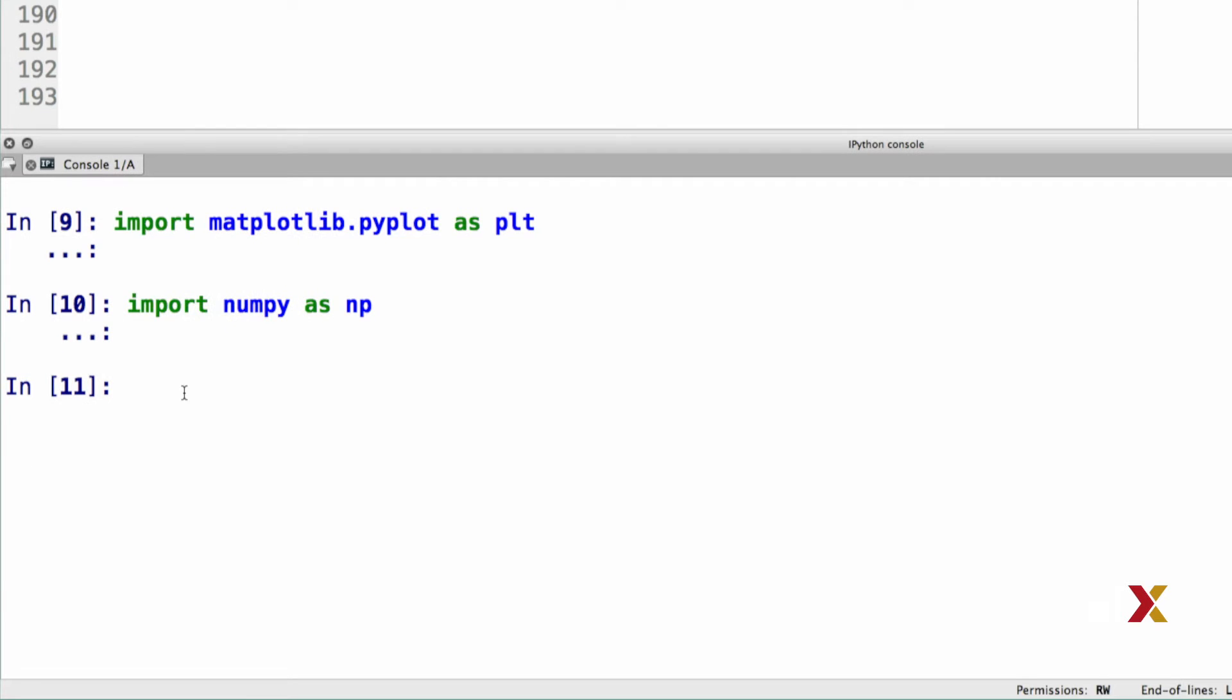The first step is going to be to create random numbers. Here, we'll be using np.random.normal, and I need to specify how many numbers I'd like to draw from the standard normal distribution.